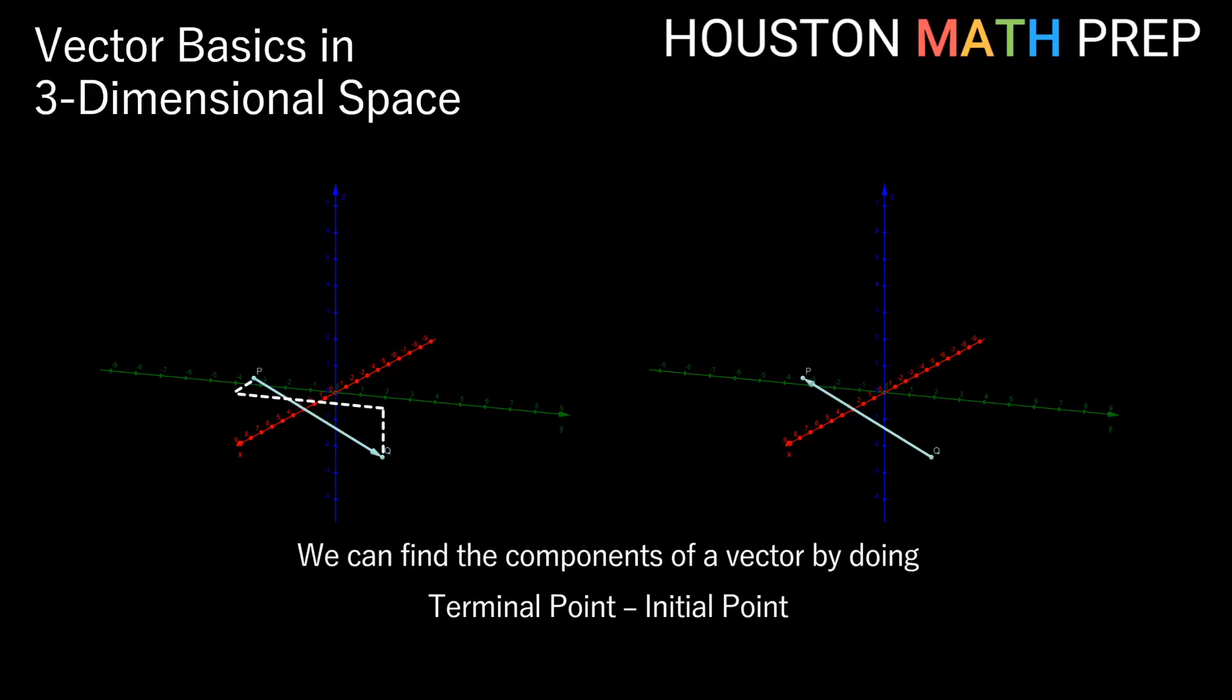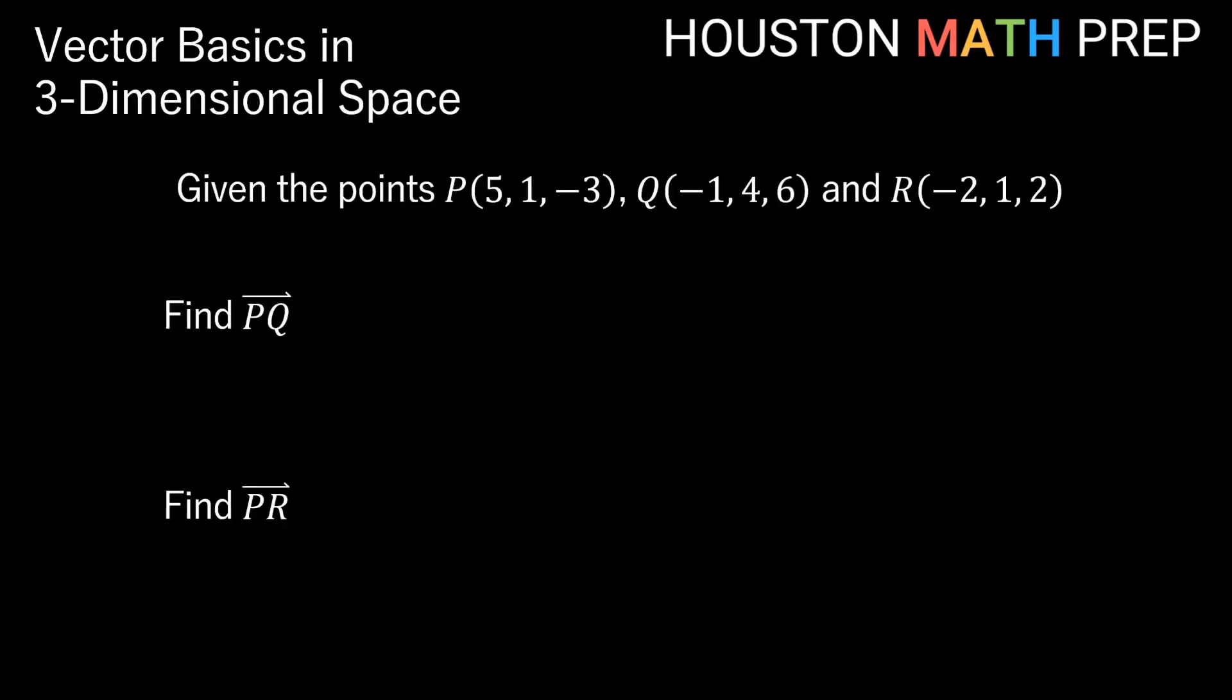Whenever we want to find a vector between two known points, we can always take the terminal point, which is the ending point, and subtract the initial point, or the starting point. Let's do a couple of examples of finding a vector between two points. So if we're given the points P, which is 5, 1, negative 3, Q, which is the point negative 1, 4, 6, and R, which is the point negative 2, 1, 2, our first one here is asking us to find the vector PQ.